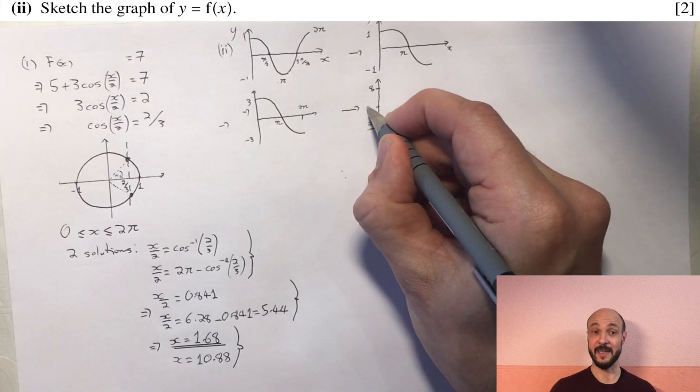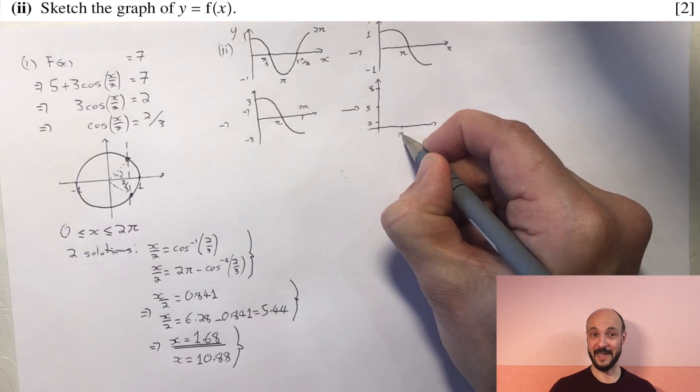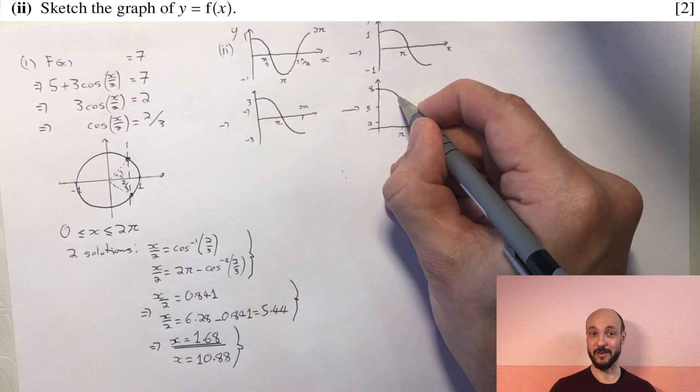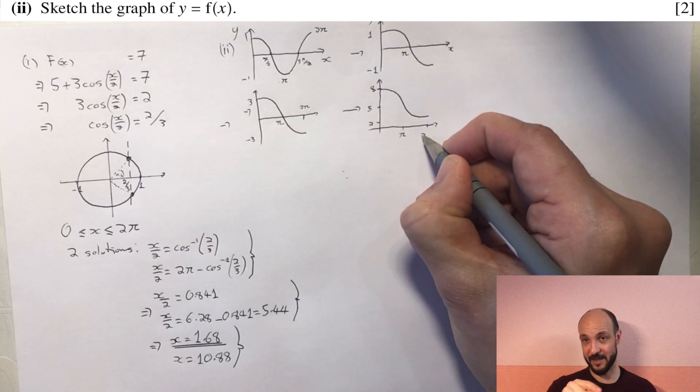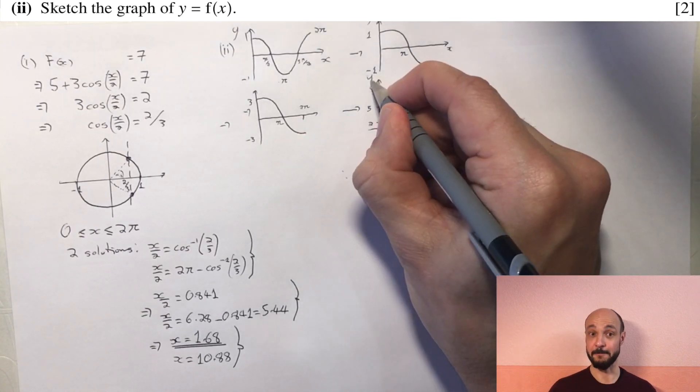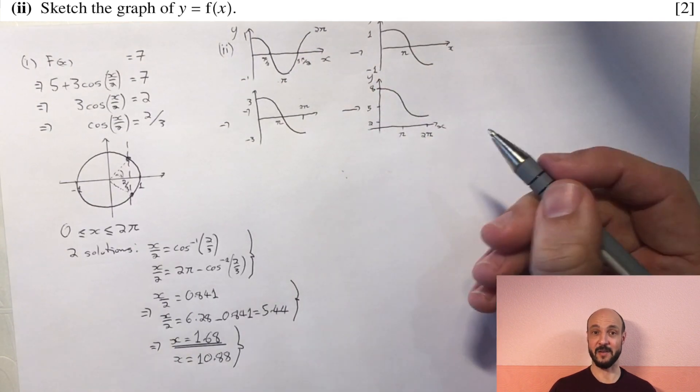So instead of crossing at 3 it now crosses at 8, and instead of going down to minus 3 it now goes down to 2, with the change in direction of the curve still being at π. And that's our final curve.